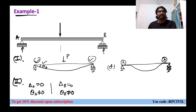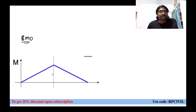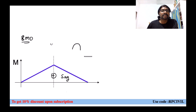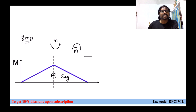We can also check consistency with the bending moment diagram. For this loading we have a positive (sagging) bending moment diagram throughout. Whenever it is a sagging bending moment diagram, convexity is always downward. Whenever it is a hogging (negative) bending moment diagram, convexity is always upward. In our visual inspection we also identified convexity downward, so the diagram is consistent.